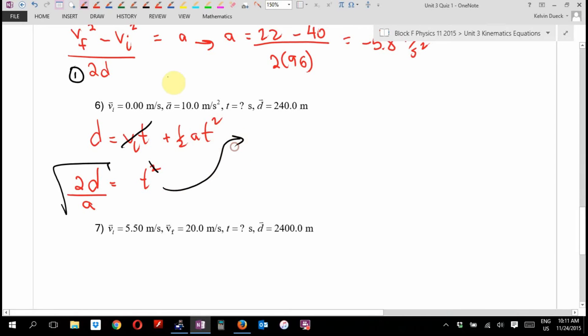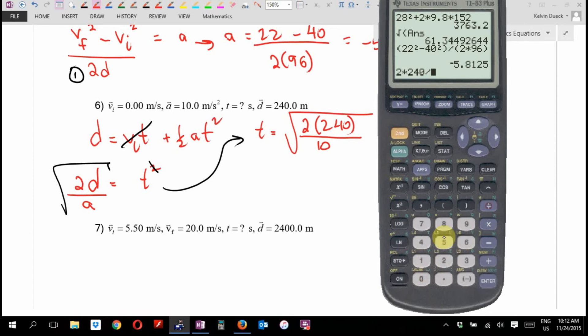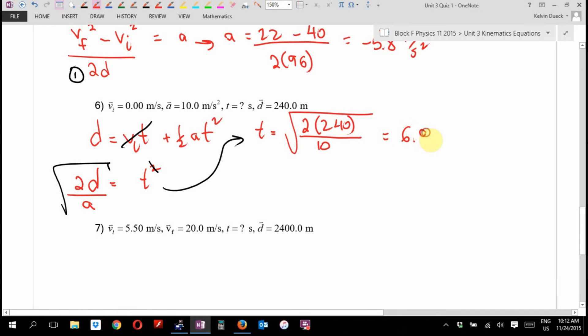So here's what I end up with. T equals big square root of 2 times 240 divided by 10. You get 6.93, 6.928. You know what? I'll go 3 sig figs. 6.93 seconds. Same as before, one mark if I saw that. Half mark for the numbers, half mark for the answer.